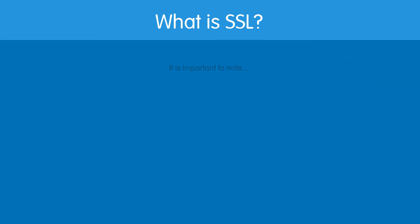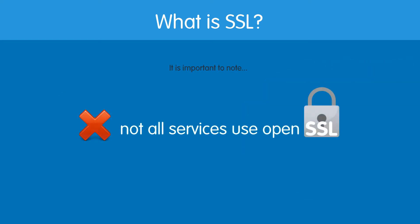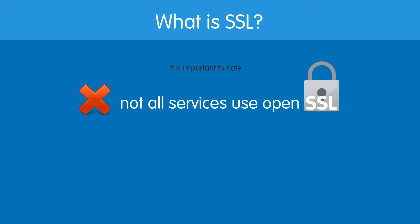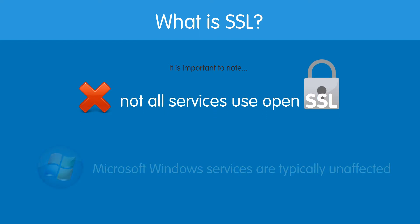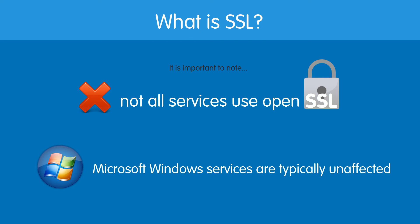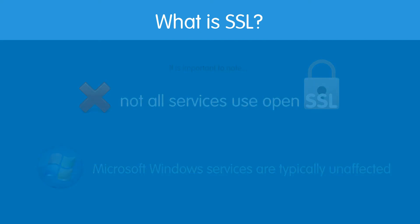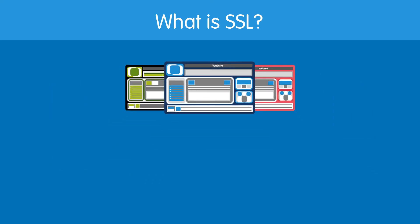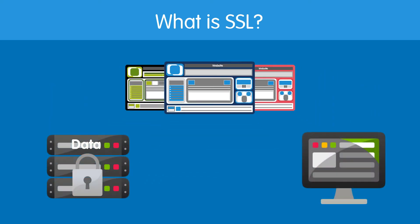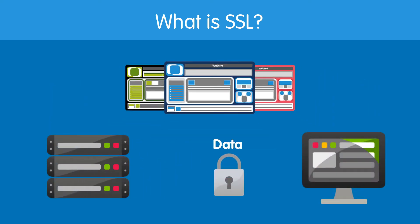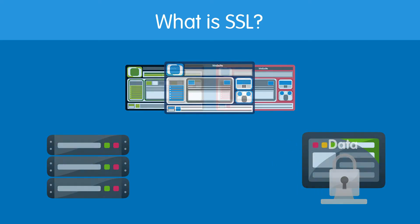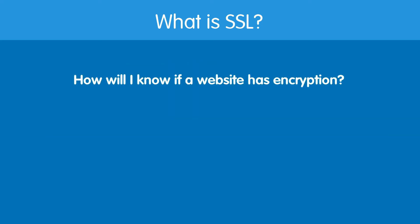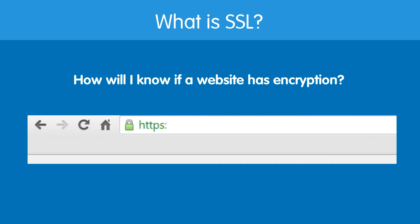It is important to note that not all services use OpenSSL to provide SSL encryption. For example, clients using Microsoft Windows-based services are typically unaffected by this bug. However, a vast majority of websites use SSL encryption to ensure that your data is sent safely between the server and your PC. You will know what sites these are by the HTTPS prefix on the address bar.